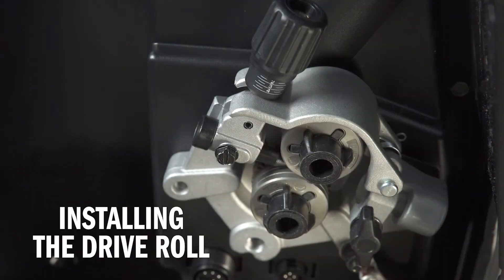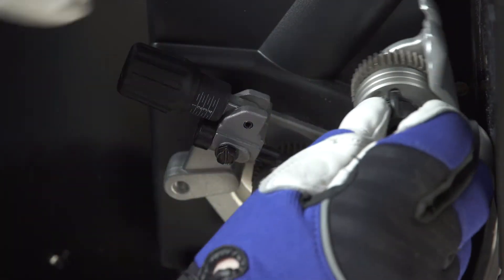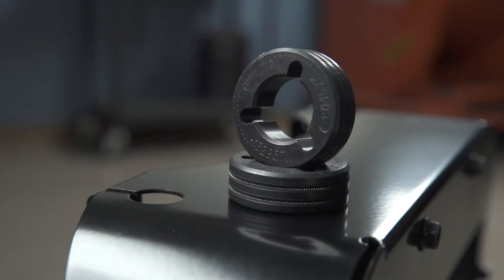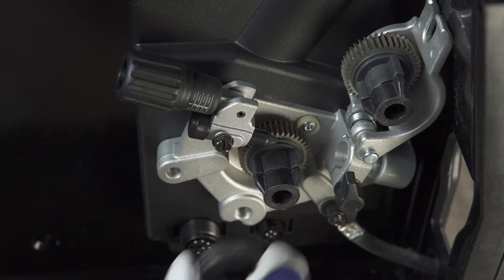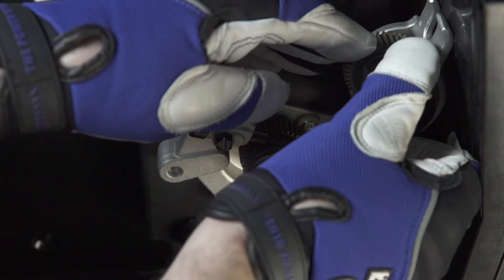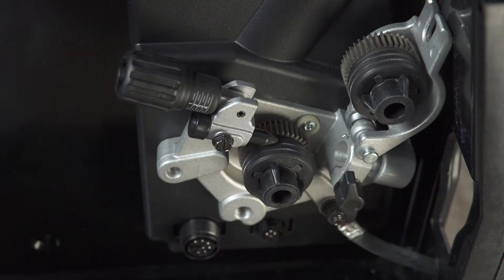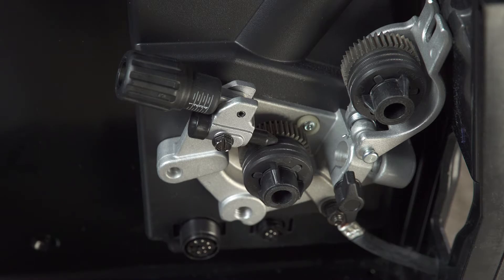The machine ships with a set of 035-045 drive rolls. Remove these drive rolls and replace with V-knurled drive rolls that will match the wire diameter. To ensure the drive roll groove matches the selected wire, insert the drive roll onto the drive roll carrier so that the desired wire diameter is facing out on the drive roll.